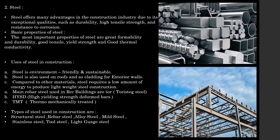Uses of steel in construction: steel is an environment-friendly and sustainable material. Steel is also used on roofs, claddings, for external walls, or in the construction of structural members. Compared to other materials, steel requires a low amount of energy to produce. There are three types of steel construction: HY, SD, TMT and TOR. Types of steel used in construction are structural steel, rebar steel, alloy steel, mild steel, stainless steel, tool steel and light gauge steel.